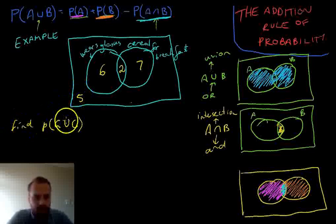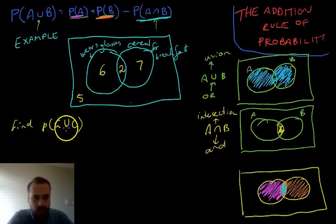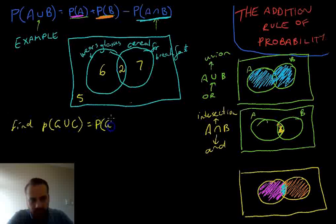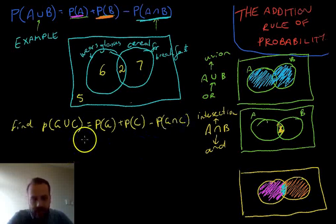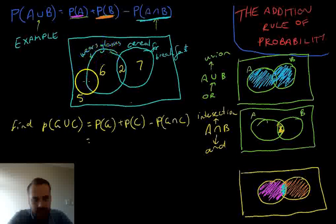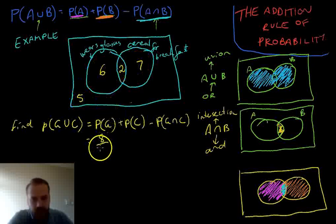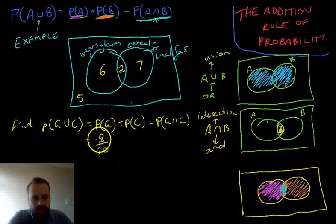Now we're going to try to find the probability that someone wears glasses or eats cereal for breakfast. So that's going to be equal to the probability that they wear glasses plus the probability that they eat cereal minus the probability that they wear glasses and, that's intersection, eat cereal. Now remember we need to deal in probabilities here. So the probability that they wear glasses is in this circle here. So it's eight out of however many kids were surveyed. And there were 20 kids surveyed. So the probability of wearing glasses is eight in 20.